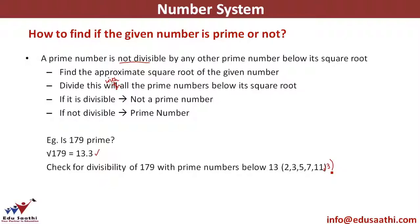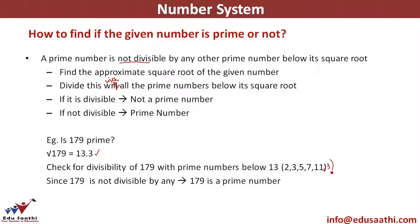Checking divisibility of 179 with 2 — not divisible. With 3 — not divisible. With 5 — not divisible. I'll check with 7, 11, and 13 as well. If it is not divisible by any of these, it is a prime number. I will not check all numbers up to 179; I only check prime numbers below the square root, because if it's not divisible by any prime below its square root, it won't be divisible by any number above it either. That is the concept of factors.